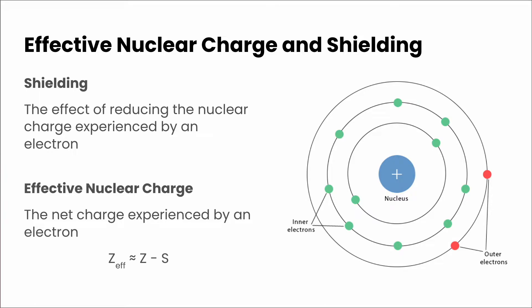But we could calculate that the effective nuclear charge or Z_eff is approximately equal to Z, which is the atomic number, minus S, which is the number of electrons that are being shielded by our atoms.